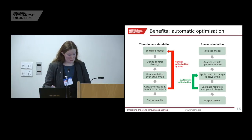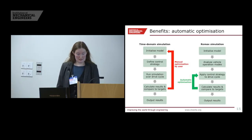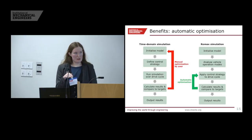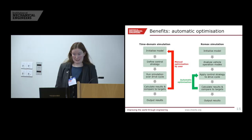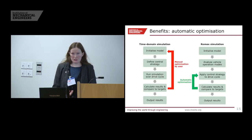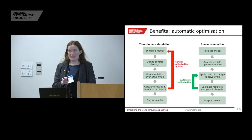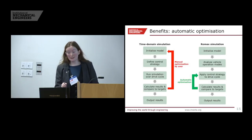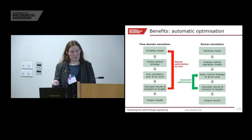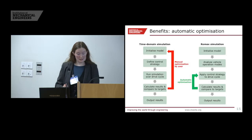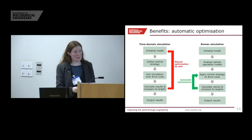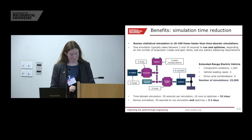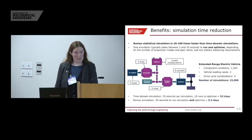This illustrates how our process works and the benefit of working in a statistical domain. In the time domain, if you want to change something in your control strategy, once you have results you need to go back to the beginning and repeat the process. In the ROMAX simulation, the most time-intensive part is outside the optimisation loop — analysing vehicle operation modes, where we calculate all the speed, torque, and power matrices. Within the optimisation loop, we apply the control strategy, balance the battery, and select which of the pre-calculated states gives the best efficiency for each operating point. This runs quite a lot faster than time domain simulation in our experience.